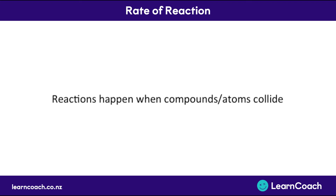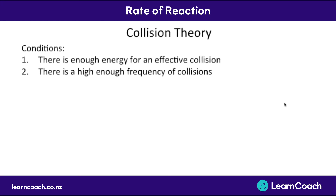Welcome to this video on rate of reactions. Here we're going to look at the factors that affect how fast a reaction happens. The first thing you need to know is that reactions happen when compounds or atoms collide together. This is called collision theory, which is about what happens when two compounds collide.